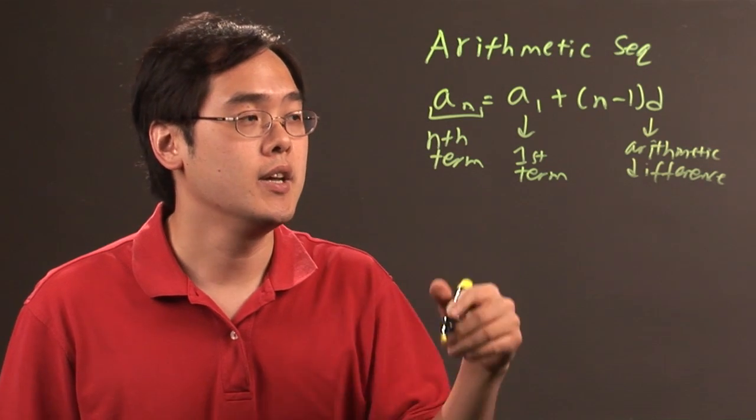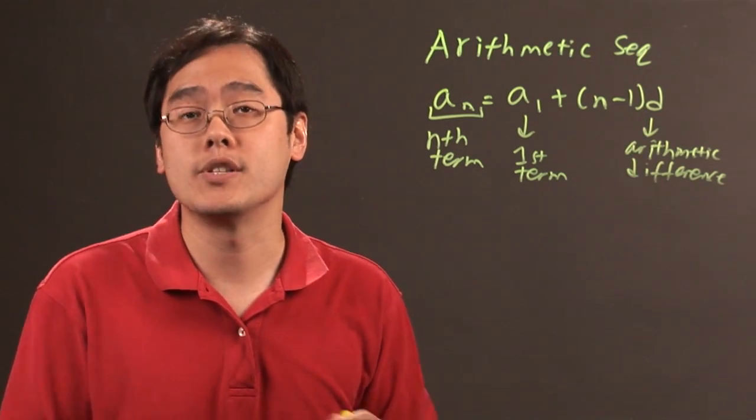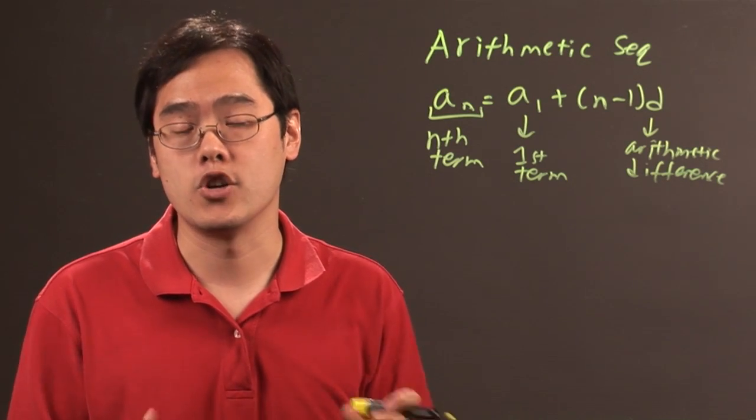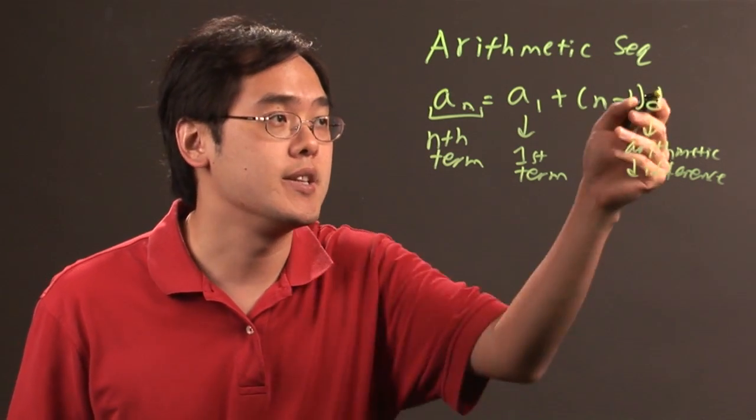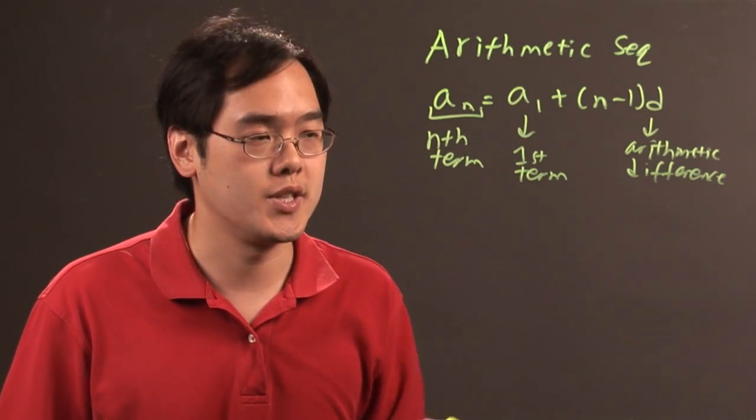In other words, if the sequence is separated by adding 3, d is plus 3. Or, if the sequence is separated by subtracting 2, then d would be minus 2. This is a great formula for the nth term of an arithmetic sequence.